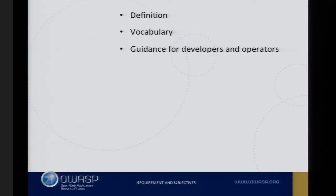So what I decided to do was to start another OWASP project — anyone can start an OWASP project. What I wanted to do was identify, name, categorize, and provide guidance on how to defend against automated threats. So the first starting point was to get the name sorted out, and what we're talking about today is really the output of that: an ontology of automated threats. I wanted it to be vendor neutral and technology agnostic.